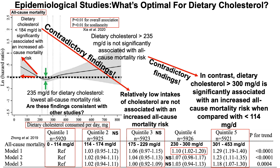Now we have contradictory findings. In one study, less than 184 milligrams per day of dietary cholesterol is associated with increased all-cause mortality risk. In contrast, in the other study, relatively lower intakes were not associated with increased all-cause mortality risk. Similarly, in the SIA study, relatively higher cholesterol intakes are not associated with increased all-cause mortality risk, but in the Zhang study, cholesterol intakes greater than 300 milligrams per day are significantly associated with increased all-cause mortality risk. So how can we get closer to the truth here?